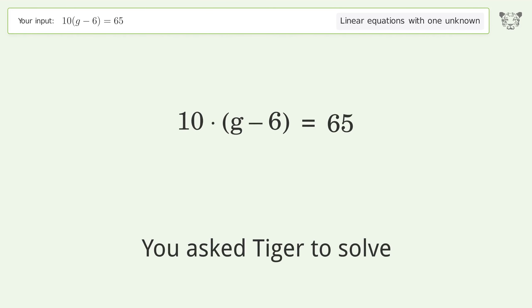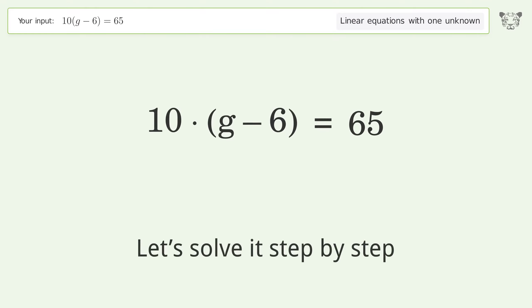You asked Tiger to solve this problem which deals with linear equations with one unknown. The final result is g equals 25 over 2. Let's solve it step by step.